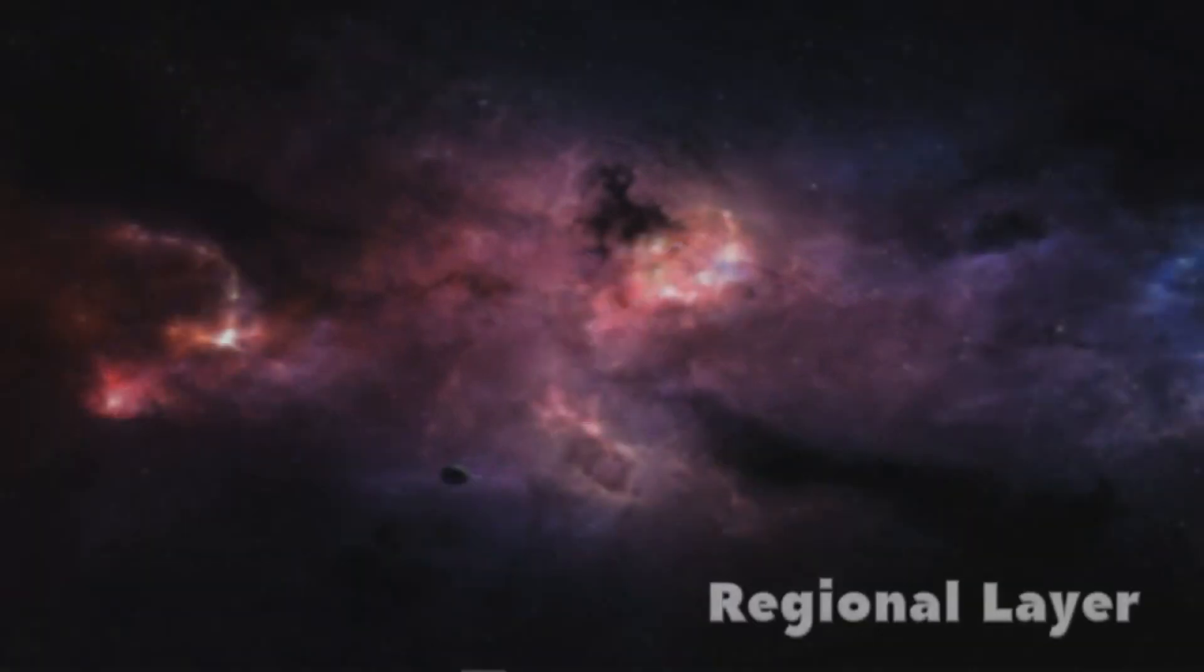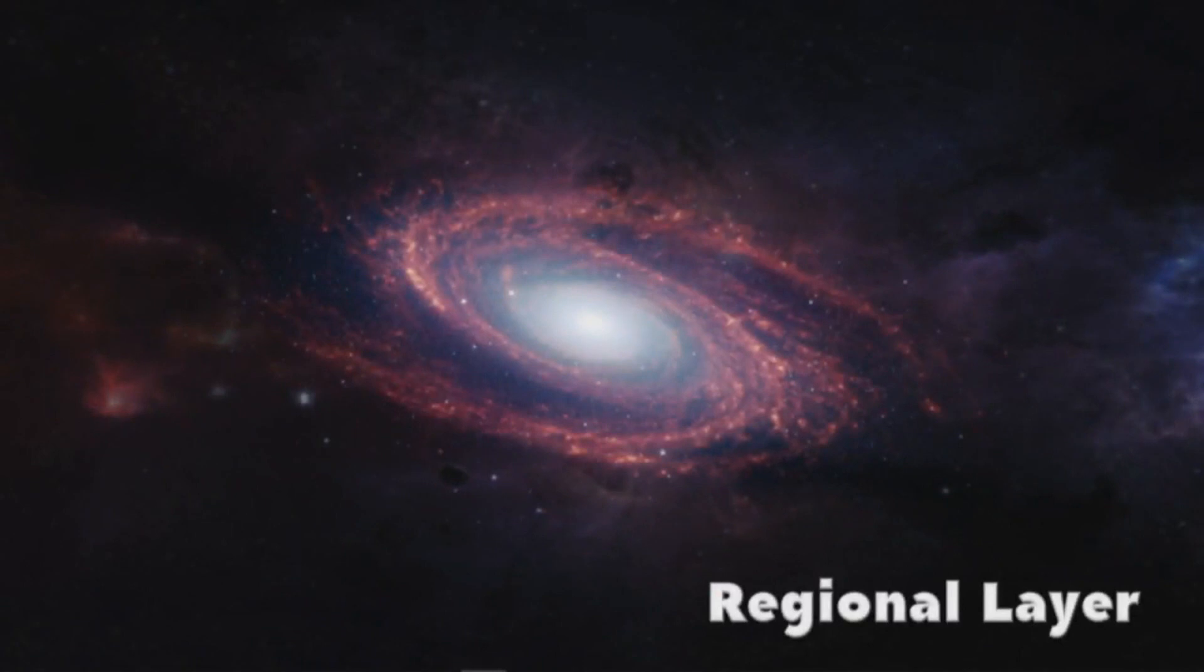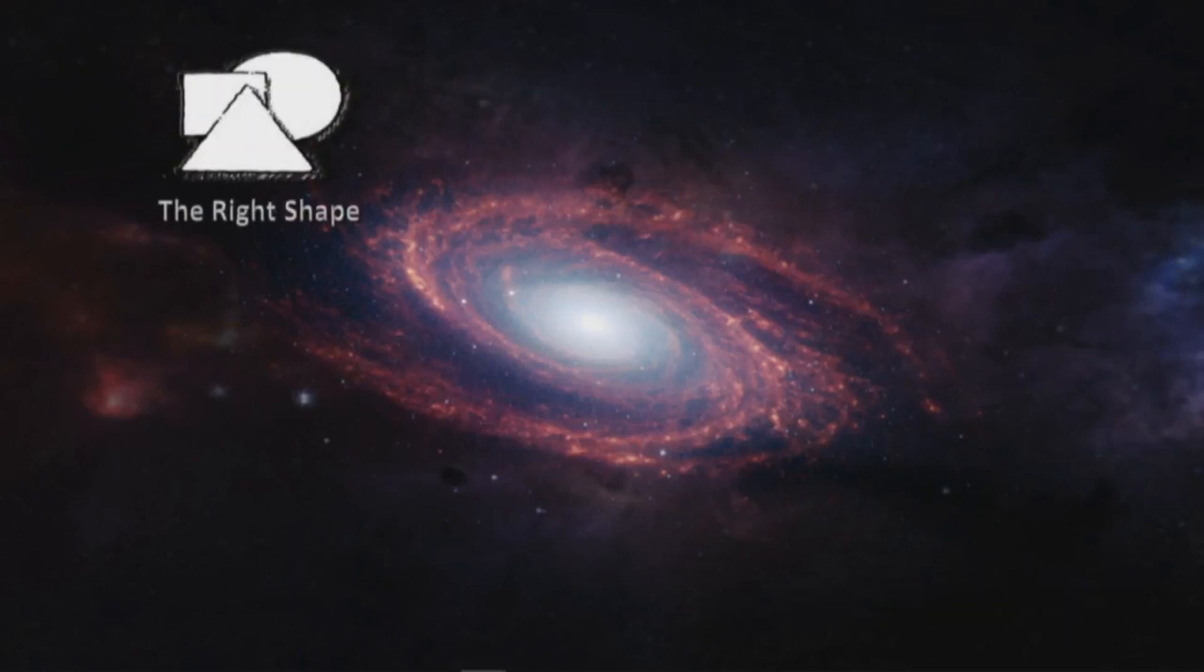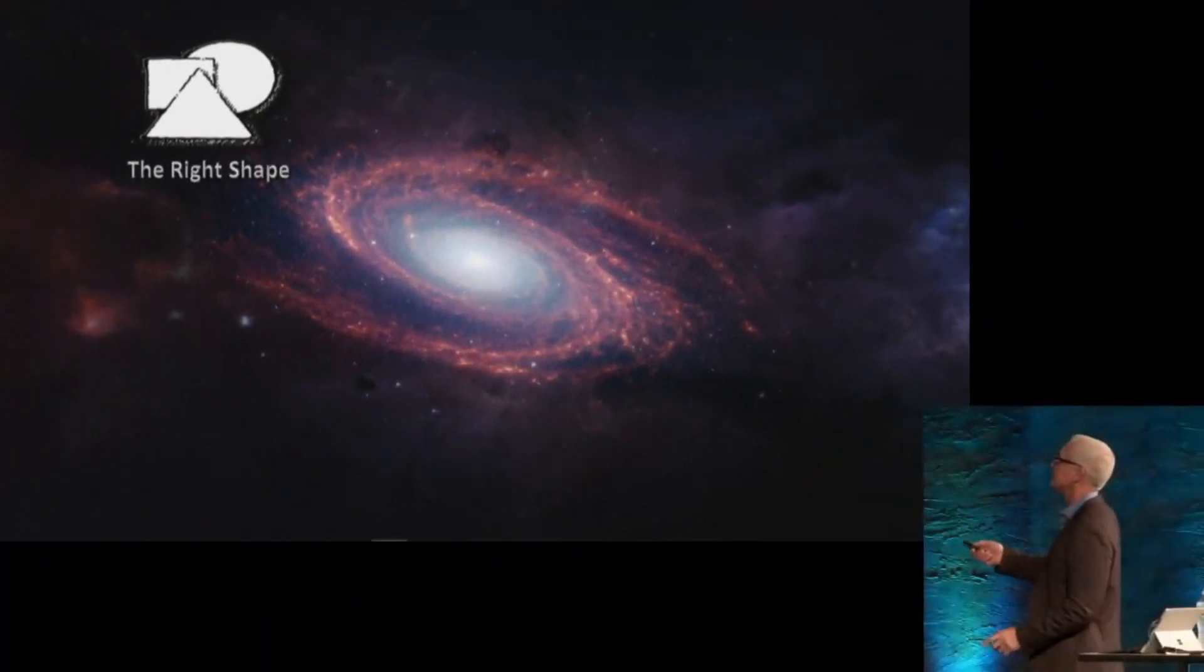It's not just at that foundational level. This is also true as you come in closer to the level of galaxies. At the regional level, you see that there's also fine-tuning. Our galaxy is incredibly fine-tuned. It's just the right shape. For life to emerge, it's far more likely to emerge in spiral galaxies.